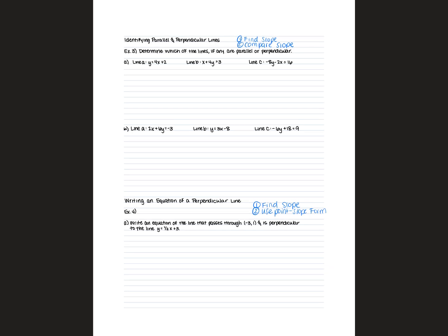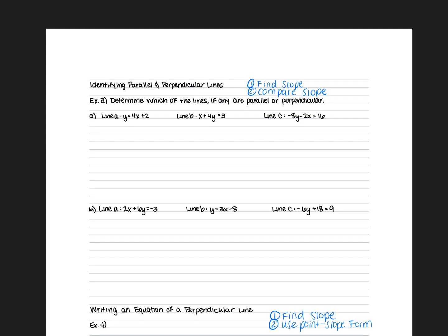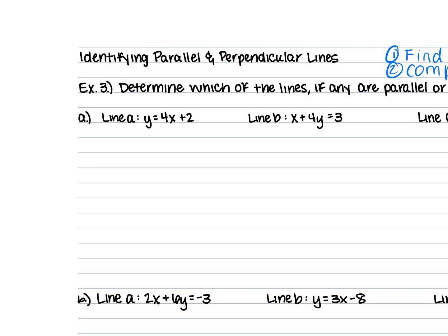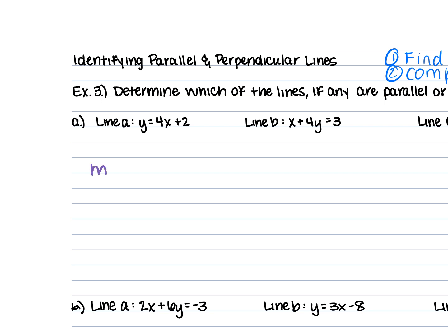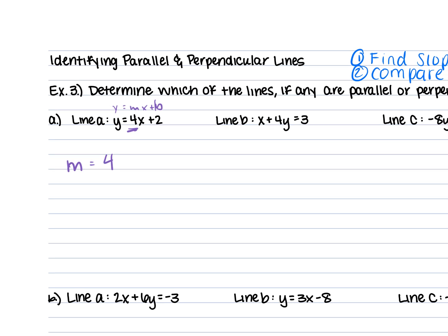For Example 3, we have to determine which of the lines are parallel or perpendicular. We find and compare the slopes. Line A is in y = mx + b form, so the slope is 4. Line B is not in slope-intercept form, so we rearrange: subtract x from both sides to get 4y = negative x + 3, then divide by 4 to get y = negative 1/4 x + 3/4. So the slope of line B is negative 1/4.